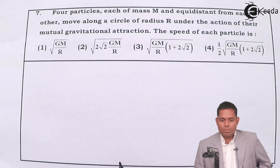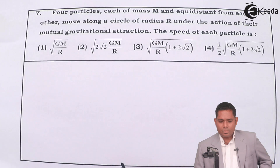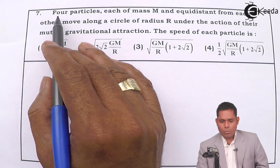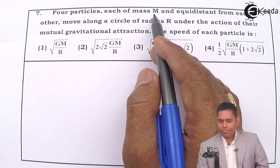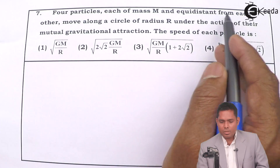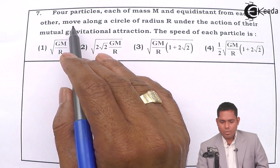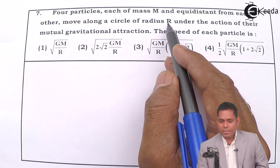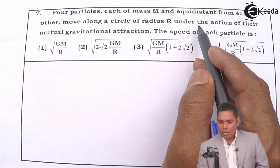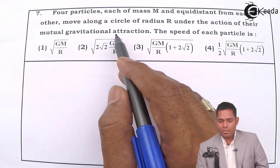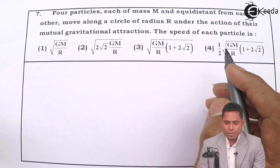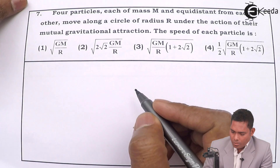Alright students, let us move to question number 7. The question is: four particles each of mass M and equidistant from each other move along a circle of radius R under the action of their mutual gravitational attraction. The speed of each particle is?